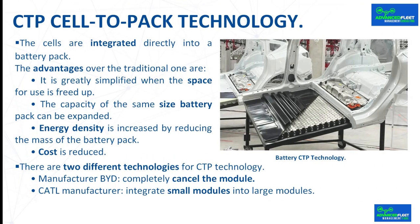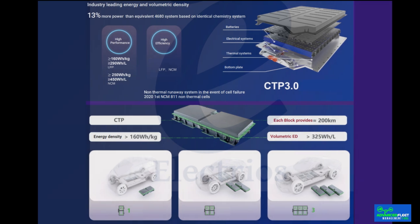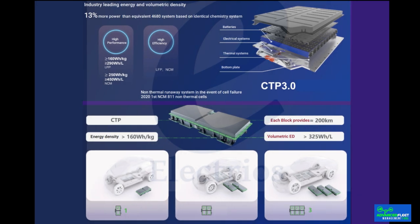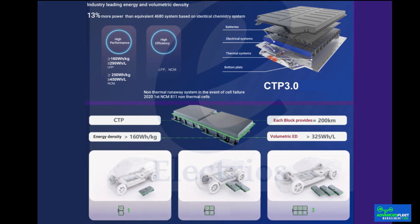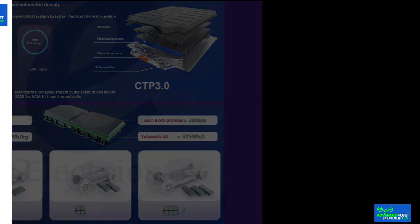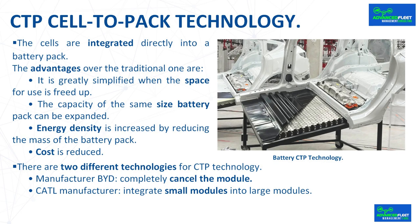CTP cell-to-pack technology: the cells are integrated directly into a battery pack, and the battery pack is integrated into the body floor as part of the vehicle structure. This method removes the side plates and end plates from the module itself, as well as the beams and longitudinal beams which were originally used to separate the modules. The advantages are greatly simplified assembly, freed-up space, expanded capacity for the same size battery pack, increased energy density by reducing mass, and reduced cost.